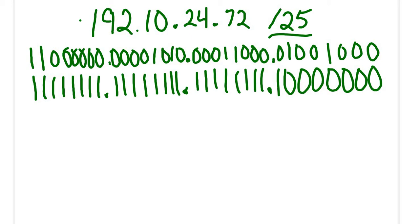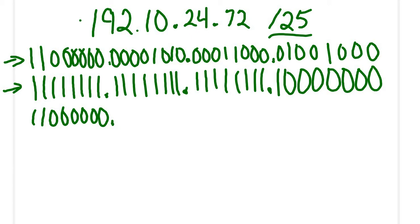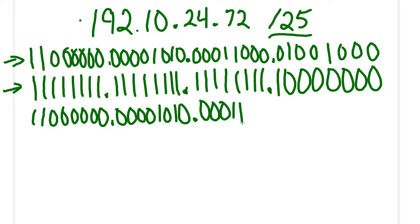Now our first step is we had to figure out what our network address is. The network address is determined by ANDing our IP address and our subnet mask. When we AND: if a 1 and a 1, that gives me a 1. A 0 and a 1 is a 0. Next octet: 0 and 1, 0 and 1, 0 and 1, 0 and 1, 1 and 1, 0 and 1, 1 and 1, 0 and 1. Third octet: 0 and 1, 0 and 1, 0 and 1, 1 and 1, 1 and 1, 1 and 1, 0 and 1, 0 and 1.